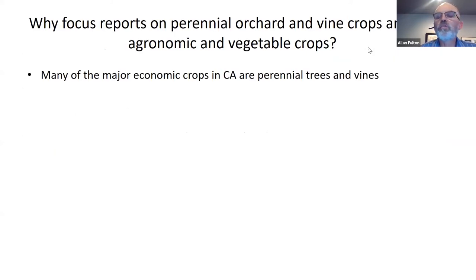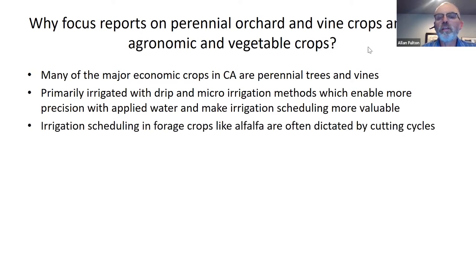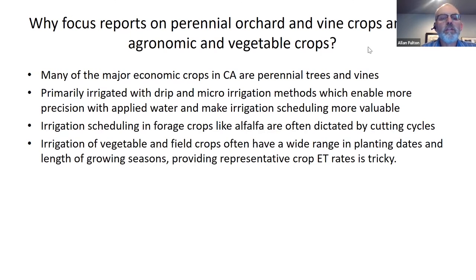Why do we focus reports on perennial orchard and vine crops and not agronomic and vegetable crops? Many of the economic crops in California are perennial trees and vines — there are well over two million acres of such crops in California. They are primarily irrigated with drip and micro-irrigation methods, which enable more precision with applied water and make information about irrigation scheduling more valuable and useful. Irrigation scheduling in forage crops like alfalfa is often dictated by other variables such as cutting cycles. In the case of vegetable and field crops, they have a wide range in planting dates and length of growing seasons, which makes it tricky for us to provide representative crop ET rates, particularly in a short, concise, one-page report each week.